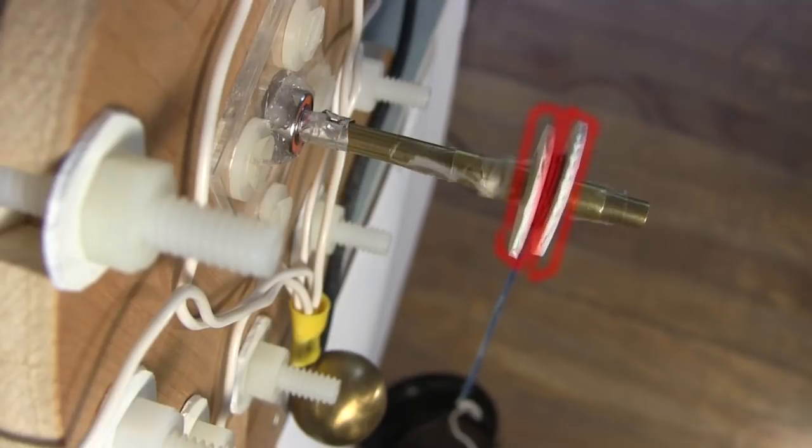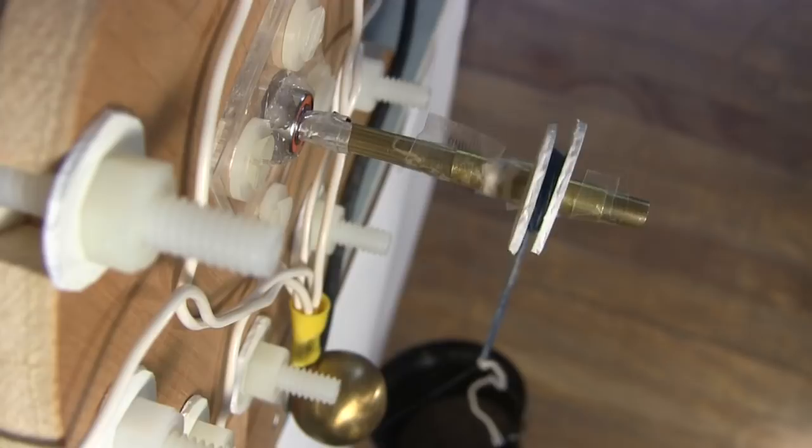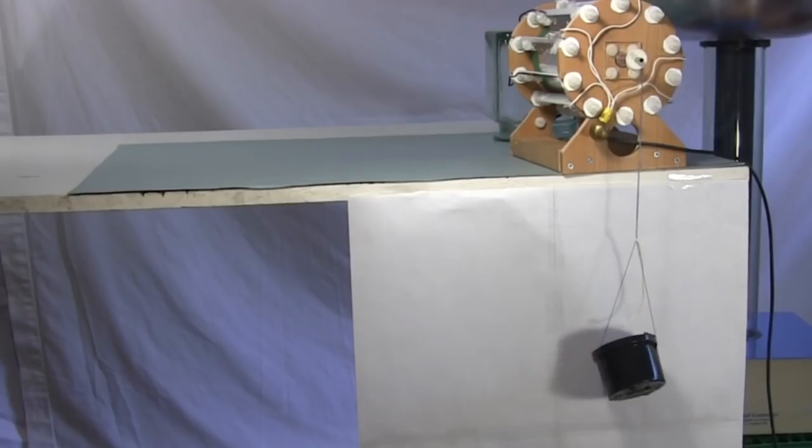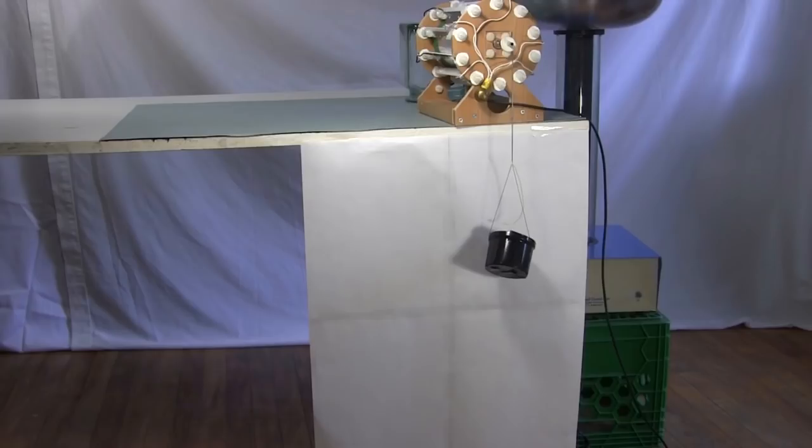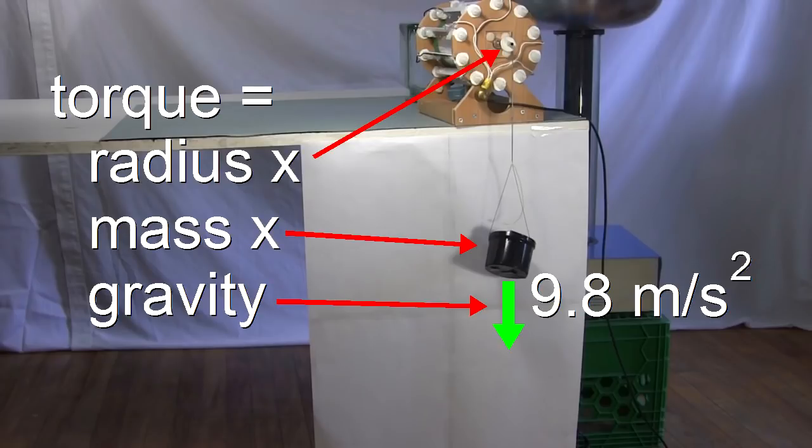To do that, these two plastic pieces can guide the string so it wraps up on itself, increasing the radius. At some radius, it should no longer be able to lift it, and using that radius and the mass of the container and sand and the acceleration due to gravity, I can calculate the torque.